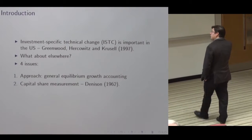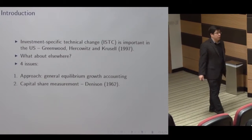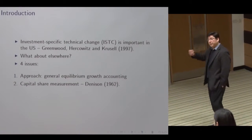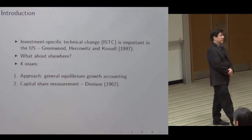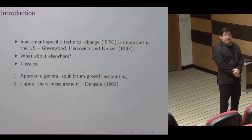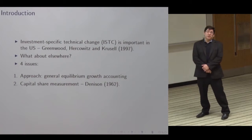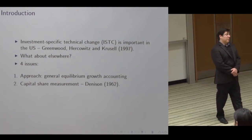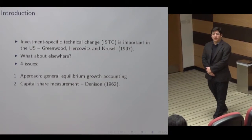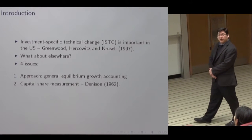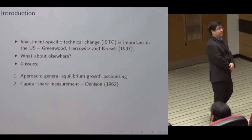That's consistent with GHK — Greenwood, Hercowitz, and Krusell. A second issue is that, given that ISTC works through the investment function — all to do with the rate at which capital is accumulated compared to output — the capital share in GDP is going to be very important. This may be a particular concern in developing countries that depend heavily on natural resources for income, where you might want to make sure resources are taken out when measuring the capital share.